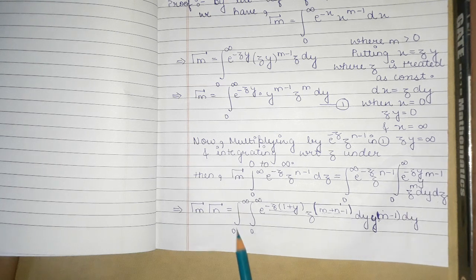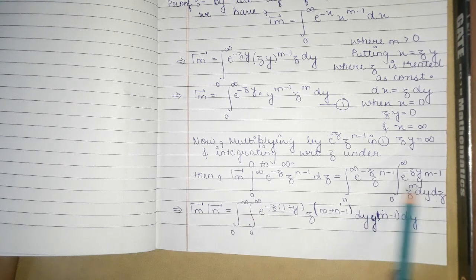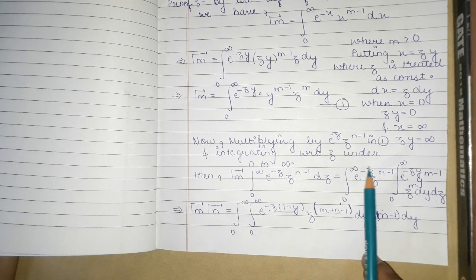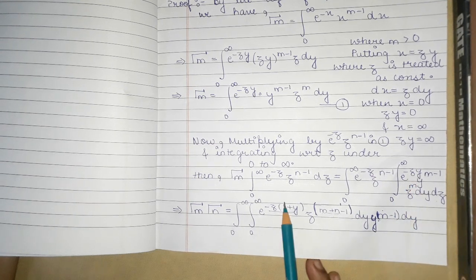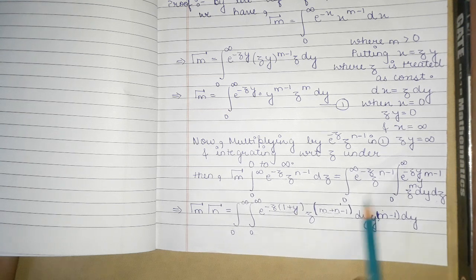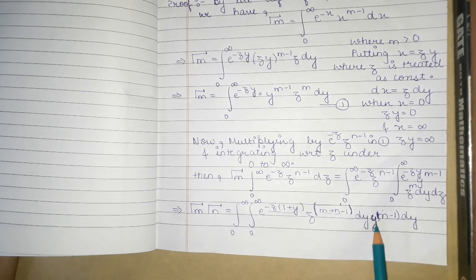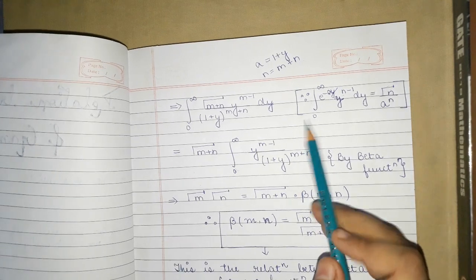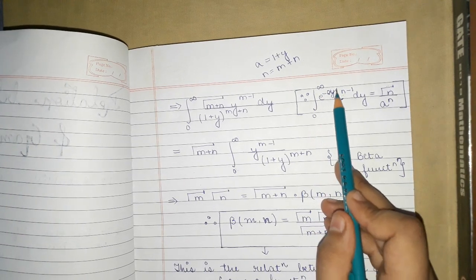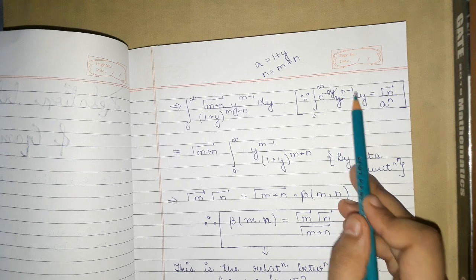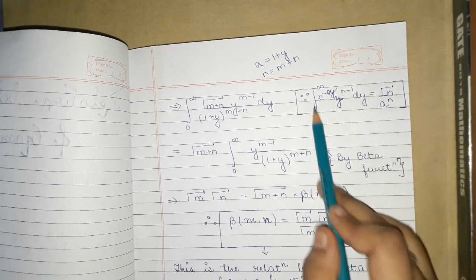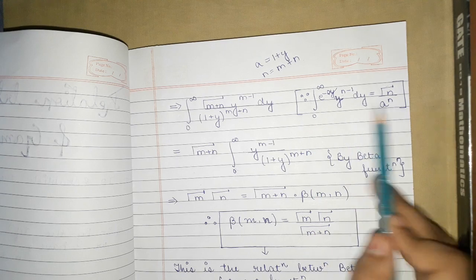Now solving the right-hand side, we combine the exponential terms e^(-z) and e^(-zy) to get e^(-z(1+y)), and collect powers of z to get z^(m+n-1). We use the known formula that the integral from 0 to infinity of e^(-ay) y^(n-1) dy equals Gamma(n) / a^n, which was derived earlier.